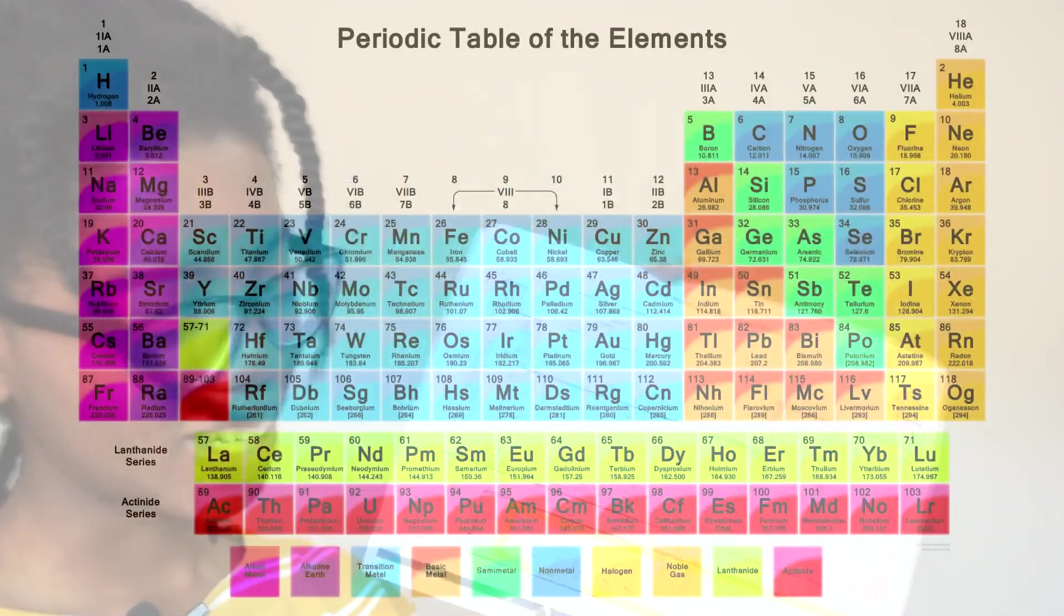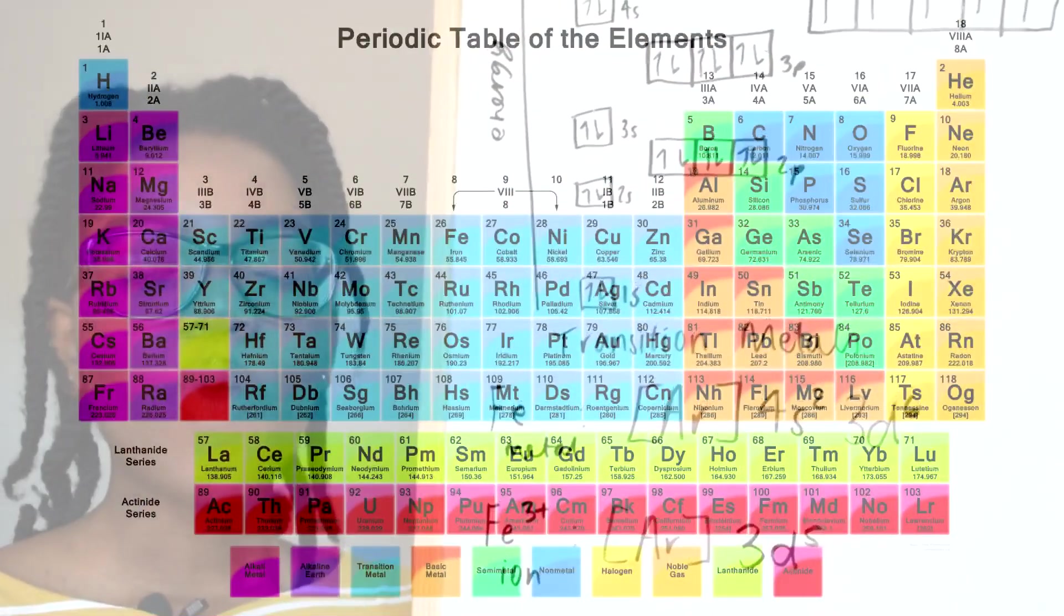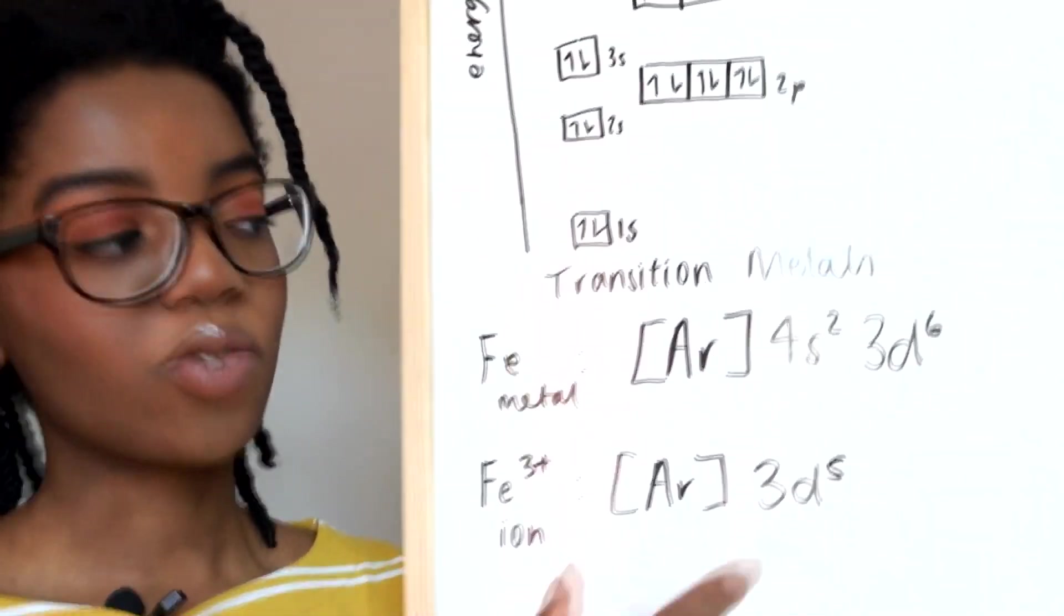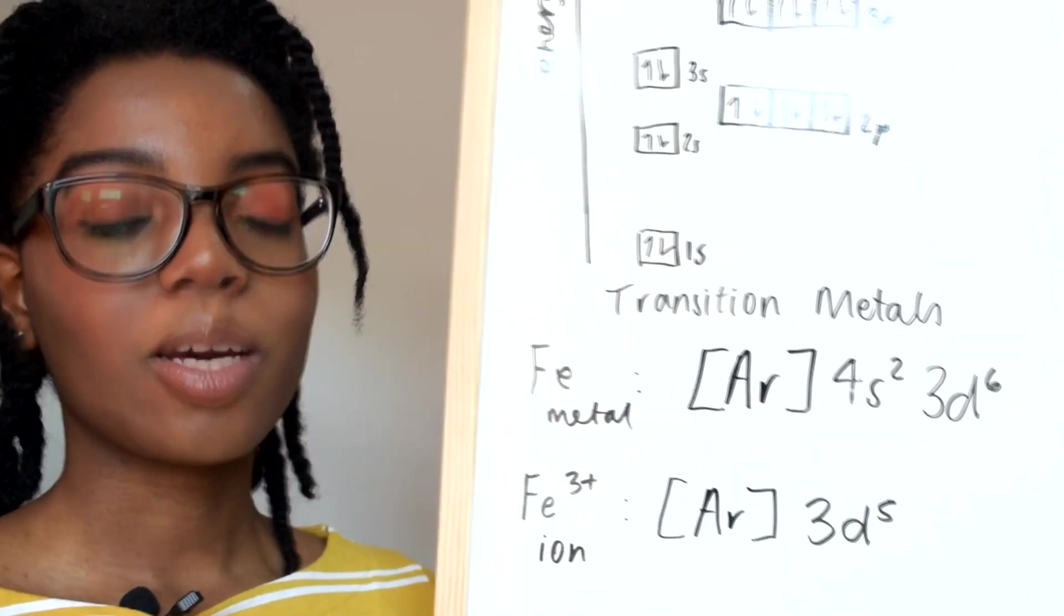With the transition metals there's actually something even more interesting, you know with the iron. When forming a transition element, we actually lose electrons from the 4s2 subshell first.